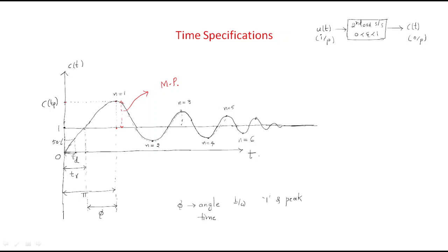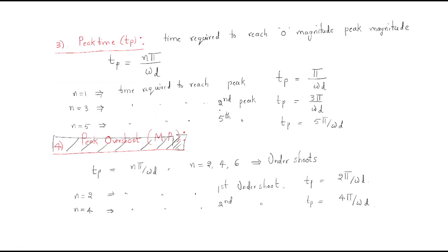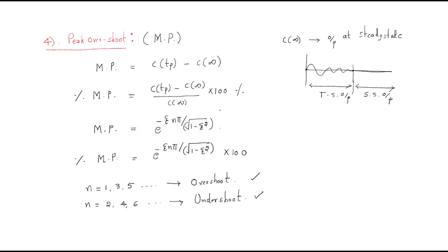For n = 1, the first overshoot magnitude is obtained. For n = 2, 4, and 6, the corresponding undershoot magnitudes are obtained respectively. These are the different magnitudes we can find for the peak overshoot parameter.